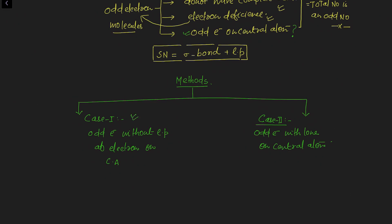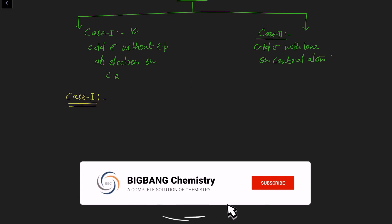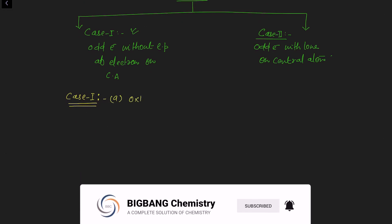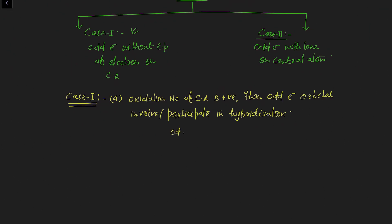First, we will discuss case number one. In case number one, how will we treat such odd electron species? The first condition is: if the oxidation number of the central atom is positive, then the odd electron orbital will involve or participate in hybridization. This means we will treat that odd electron as a lone pair of electrons and consider the given odd electron as a lone pair of electrons.